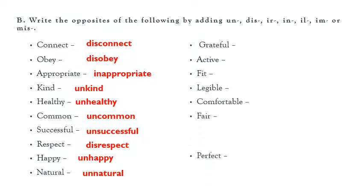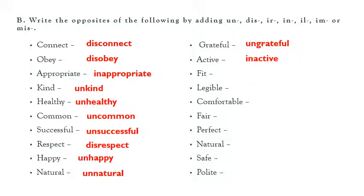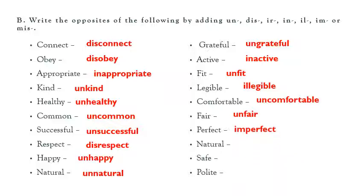Let's see some more words. I have given you some more words and you have to make antonyms of these by using the prefix. Grateful — ungrateful: kisi ke liye abhaari hona, aur uska opposite ungrateful. Active — inactive: active matlab jo har kaam jaldi se kar de; inactive matlab jo bilkul lazy hai, koi kaam nahi karta time se. Fit — unfit. Eligible — ineligible. Comfortable — uncomfortable. Fair — unfair. Perfect — imperfect. Natural — unnatural. Safe — unsafe. Polite — impolite: polite jo bahut pyaar se baat kare, aur impolite jo rudely baat kare.